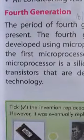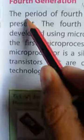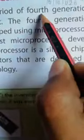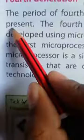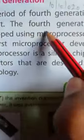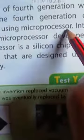The period of 4th generation was from 1971 to present. Period means avadhi, 4th means 4th generation. Present means vartman. 4th पीढ़ी की अवधि 1971 से वर्तमान तक थी. The 4th generation computers were developed using microprocessor.